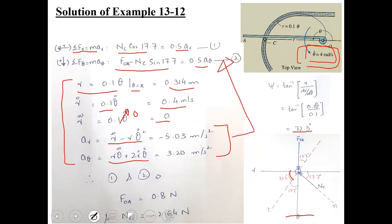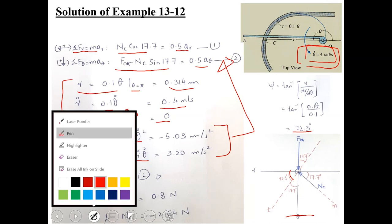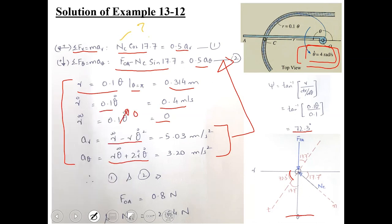Substituting AR and Aθ into equations 1 and 2, we have two equations with two unknowns: NC and F_OA. Solving simultaneously, the force of the arm comes out to be F_OA = 0.8 Newtons.